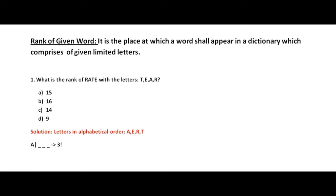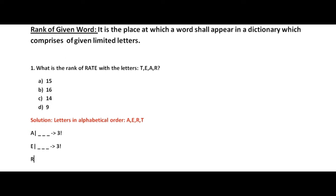Our aim is not to find a word which starts with A, since we need to find the rank of RATE, and that starts with R. So let us go ahead. The next will be the words beginning with E, because that is the second letter in alphabetical order. For this also, there will be three positions, so there will be factorial 3 number of words. Next is R.